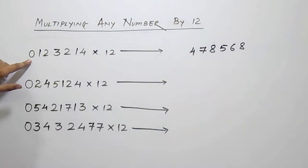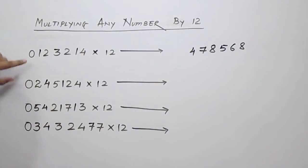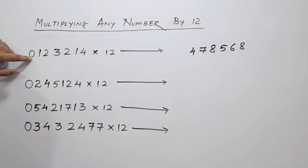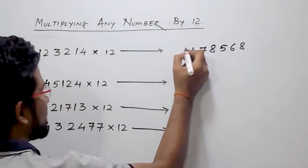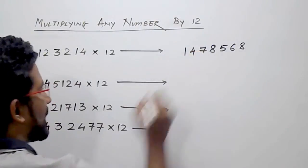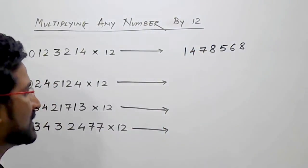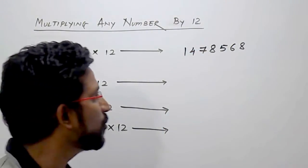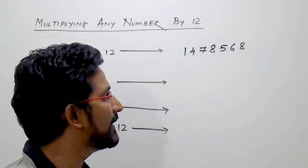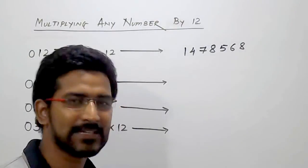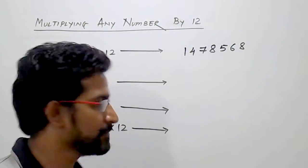Then we have the 0 that we added at the start of the number. 0's double is 0, 0 plus 1, that is 1. So the answer will be 1, 4, 7, 8, 5, 6, 8.